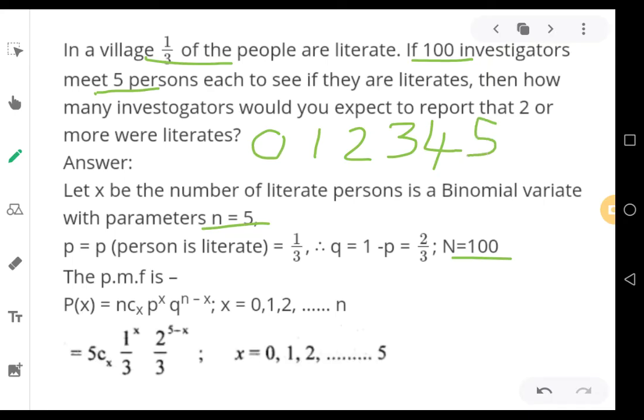So they are telling two or more. Two is also okay, three is okay, four is okay, five is okay. So you have to do 2 plus 3 plus 4 plus 5 or 1 minus 0 and 1. So 1 minus 0, 1 is easy because you get only two expansions of the formula. Therefore, we will go with reverse method.